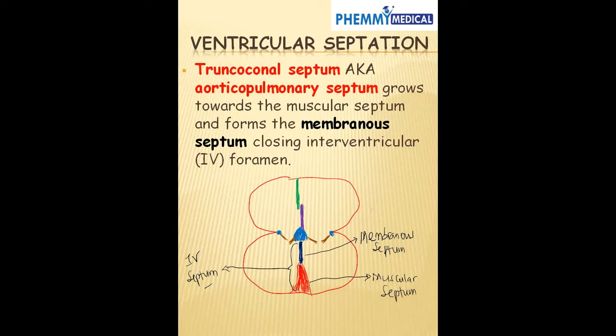A patient with an aorticoconal septum defect can have a ventricular septal defect. Examples of those conditions include persistent truncus arteriosus and tetralogy of Fallot. In those patients, there can be a problem forming the membranous septum because of a problem with the aorticoconal septum. Also, if a patient has endocardial cushion defect, that could also lead to a problem forming the membranous septum.